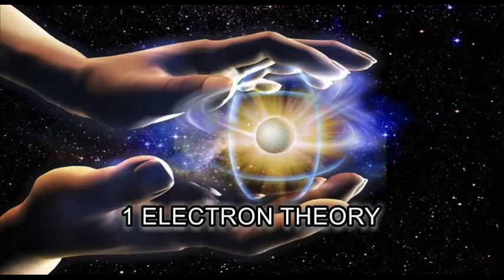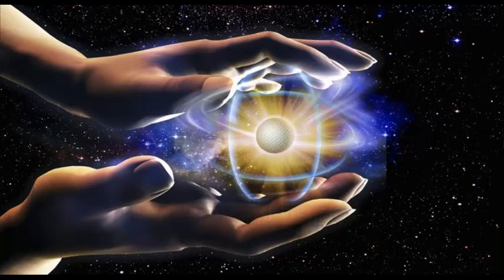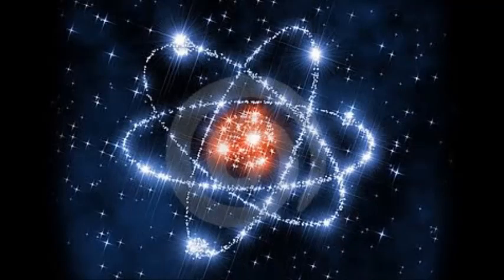What if there is only one electron in the whole universe? What if every electron is the same electron? A vaguely plausible thought experiment posits that every electron is one electron moving back and forth through time.